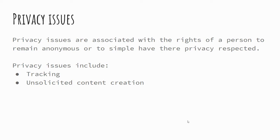Privacy issues are associated with the rights of a person to remain anonymous, or simply having their data protected. Whether it's your web provider tracking your use of computers, CCTV recording your movements when you're out in public, or cameras that pick up license plates and automatically check if a car is insured — all of these things happen without us necessarily thinking about it. We're tracked in a number of ways, most of us probably without even realising it.